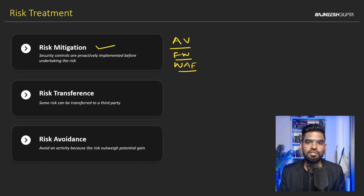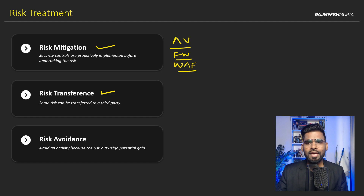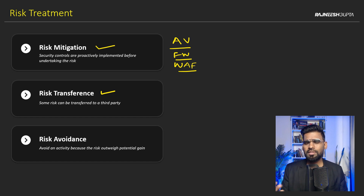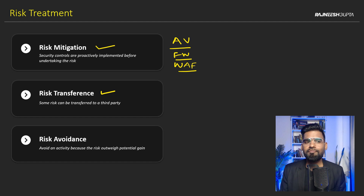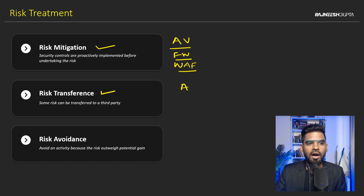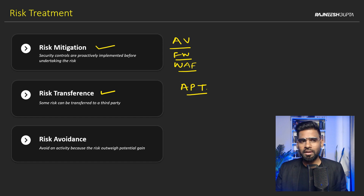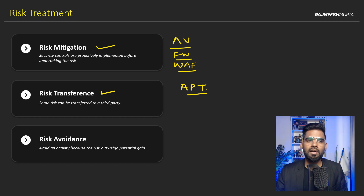Next we have risk transference. This is very interesting — there are some risks where you transfer them to third parties. Usually this means an external third party. For example, you may transfer the risk of proactively detecting advanced threats or APT-type threats, because those are advanced and persistent in nature and it may not be feasible right now to deploy all the internal resources needed.